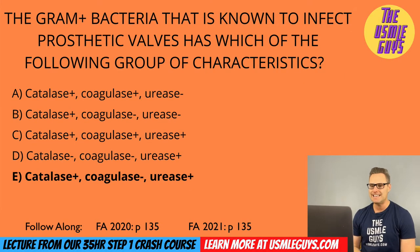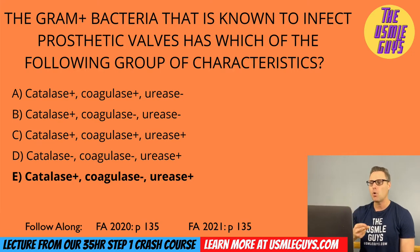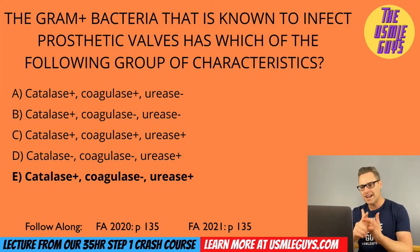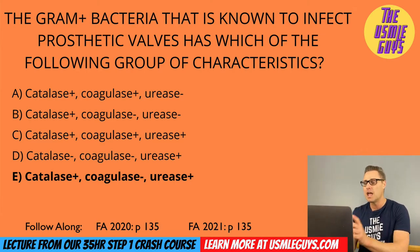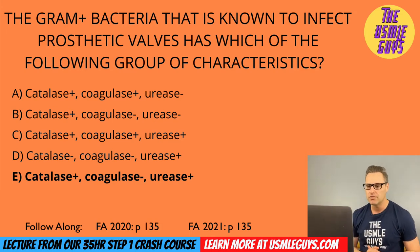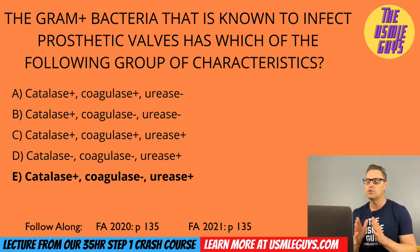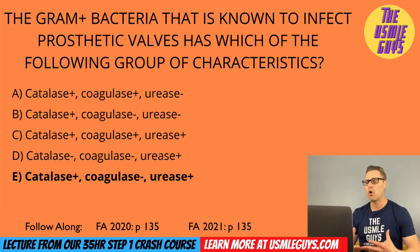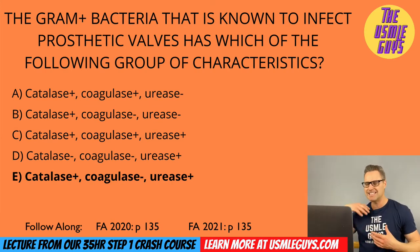The correct answer here is E — Staph epidermidis. Staph epidermidis is catalase positive, coagulase negative, and urease positive. It is a cocci grouped in clusters, novobiocin sensitive, and does not ferment mannitol — an important differentiator from Staph aureus, which does ferment mannitol. One important clinical point: it is known to infect prosthetic devices like heart valves or other implanted devices, and it can also grow well on IV catheters. Think Staph epidermidis when you see prosthetic device infections.